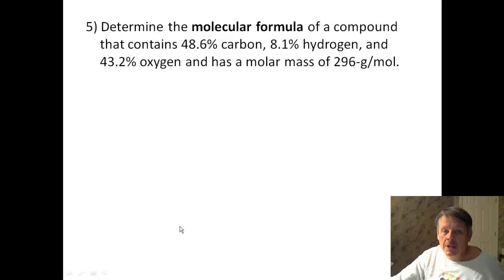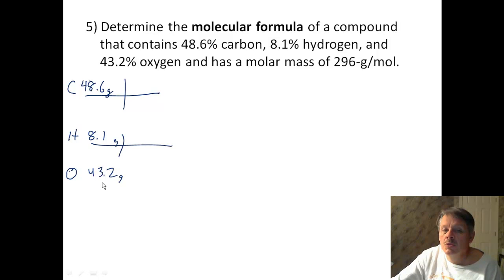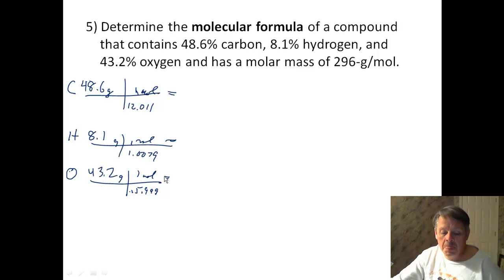Number five. Determining the molecular formula of a compound that contains 48.6 grams of carbon, 8.1 grams of hydrogen, and 43.2 grams of oxygen. And what we're going to do is we are going to convert the grams to moles. The carbon weighs 12.011, hydrogen weighs 1.0079, oxygen weighs 15.999, they're all going to one mole. So what do we get for numbers? Well, the first one, we get 4.05. The second one, we get 8.04. Well, there's a one-to-two relationship. The third one is 2.70.